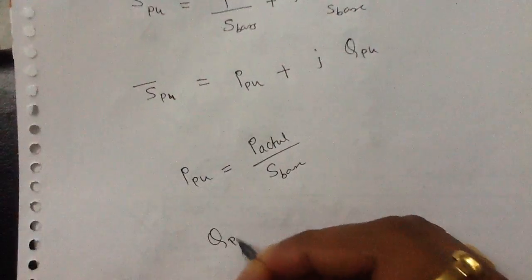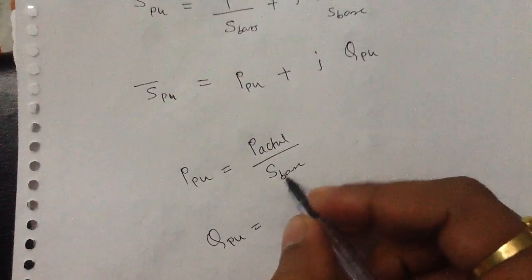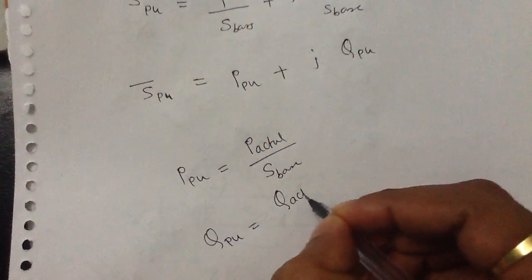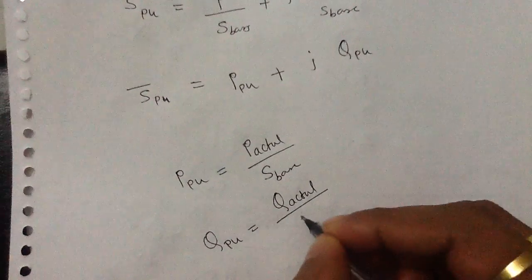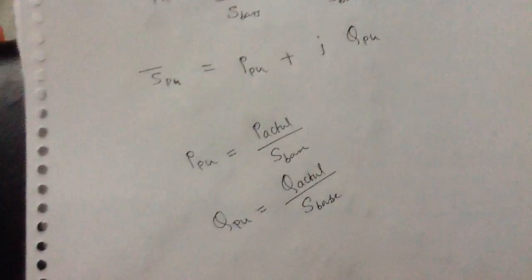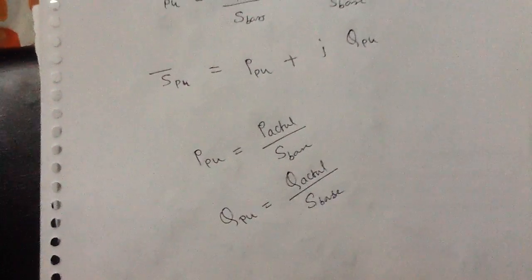If you want to write the per unit value of the reactive power, write actual value of the reactive power divided by S base. Remember this.